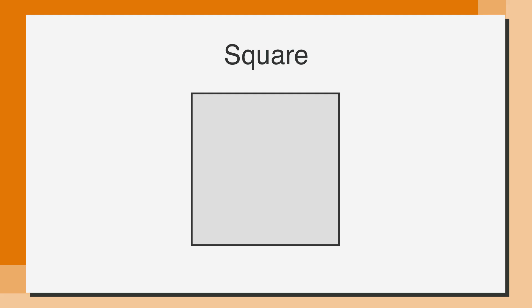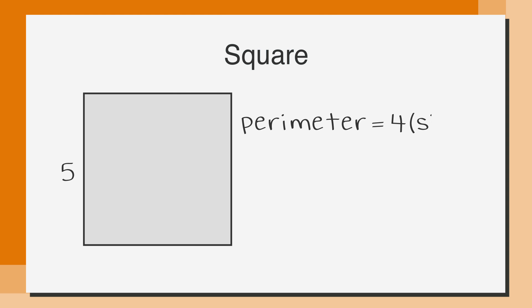Let's take a quick look at the perimeter of a square. Because all of the sides of a square are always the same, we only need to know one side of the square. The perimeter of a square is just 4 times the length of the side. So if we have a square with a side length of 5, then the perimeter of that square is 4 times 5, or 20.